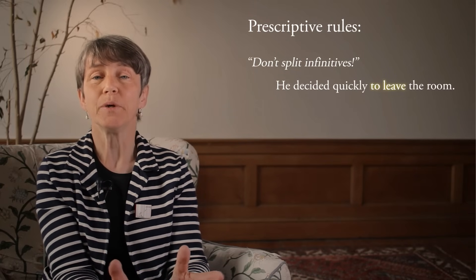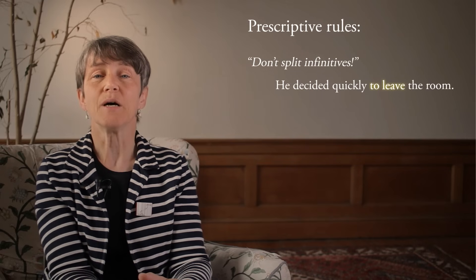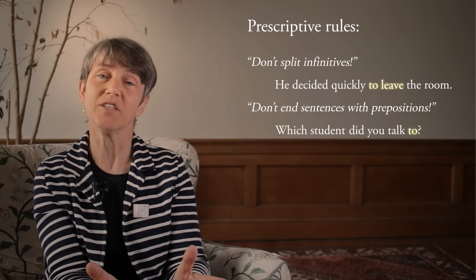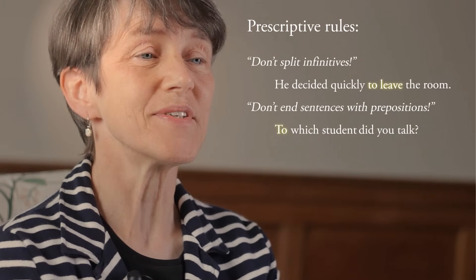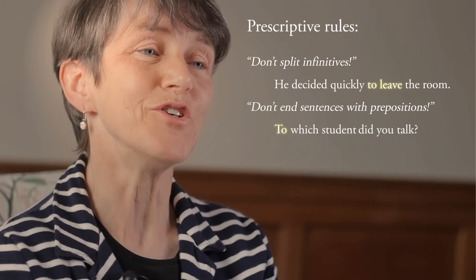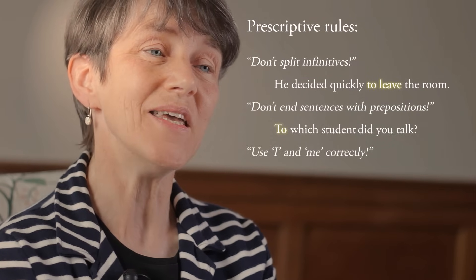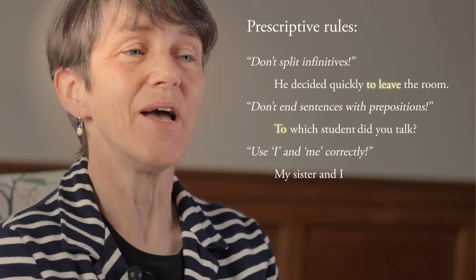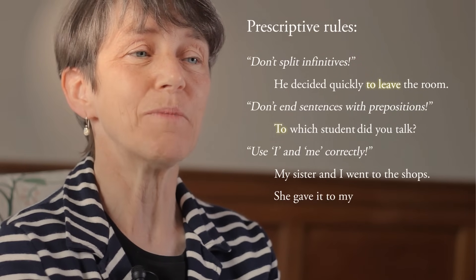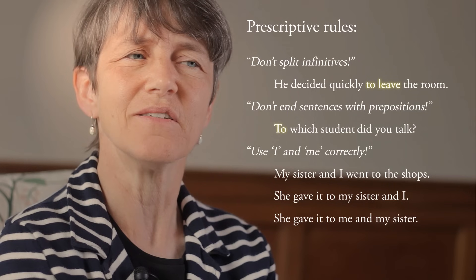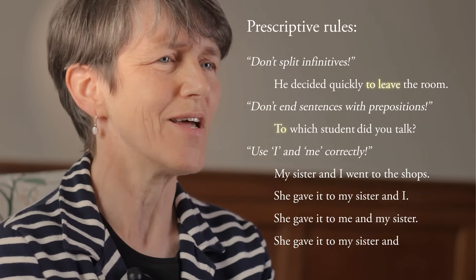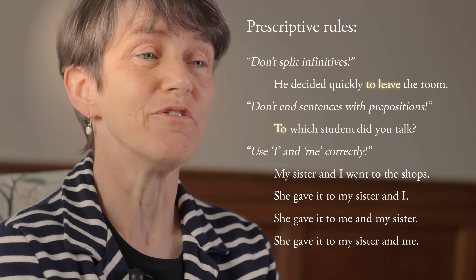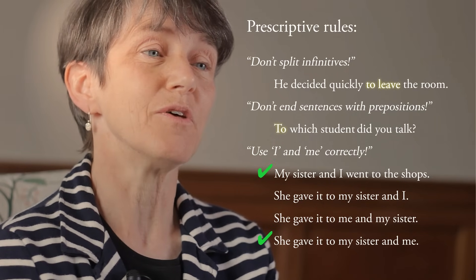There are other rules of that type. One example is that you shouldn't end a sentence with a preposition. Or there are complex rules surrounding when to use 'I' or 'me' in coordinations: 'my sister and I went to the shops'; 'she gave it to my sister and I'; 'she gave it to me and my sister'; 'she gave it to my sister and me.' There are various prescriptive rules about which of those is correct or incorrect.